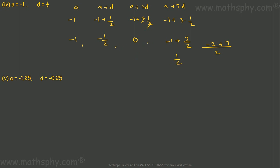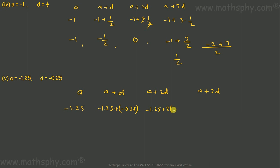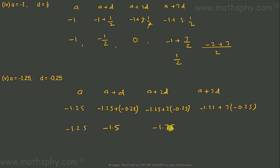This one: A is negative 1.25. A plus D: negative 1.25 plus negative 0.25. A plus 2D: negative 1.25 plus 2 into negative 0.25. A plus 3D: negative 1.25 plus 3 into negative 0.25. So the first term is negative 1.25, second term negative 1.5, third term negative 1.75, fourth term negative 2.0. First term, second term, third term, fourth term — all done.